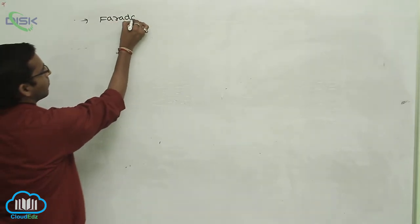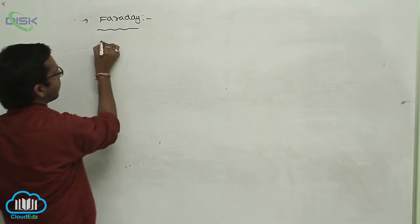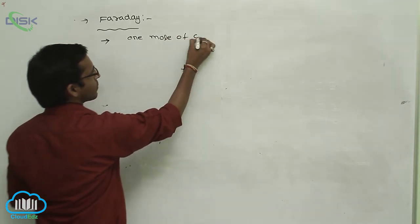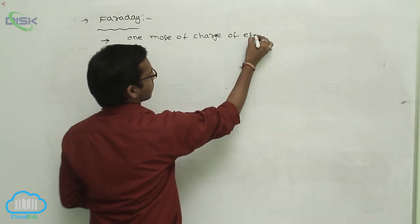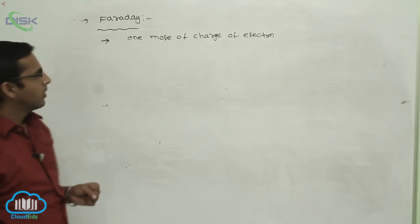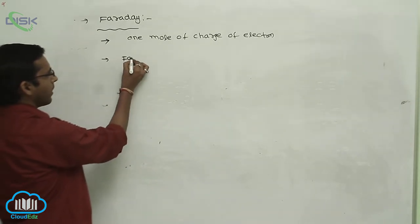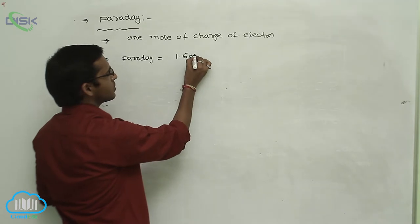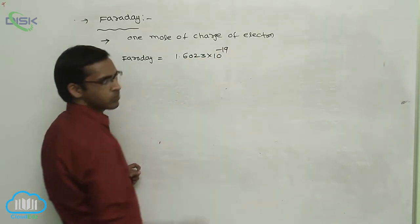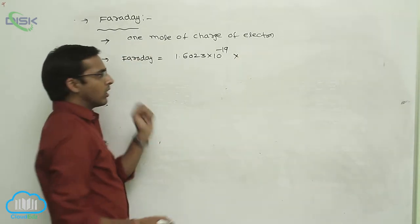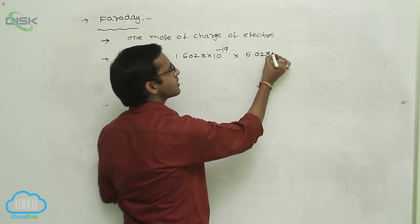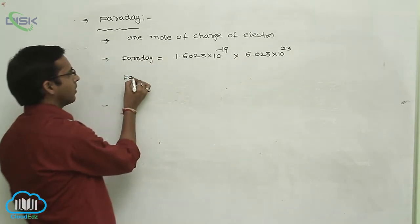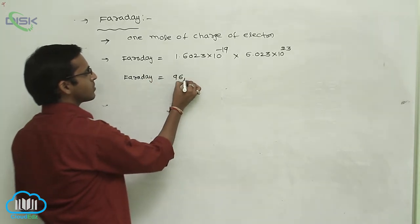Faraday means one mole of charge of electron is called as Faraday. So Faraday is equal to electron charge — the electron charge value is 1.6023 into 10 to the power of minus 19 coulombs — into one mole, where one mole contains one Avogadro number of molecules, that is 6.023 into 10 to the power of 23 molecules. So the Faraday equals 96500 coulombs.